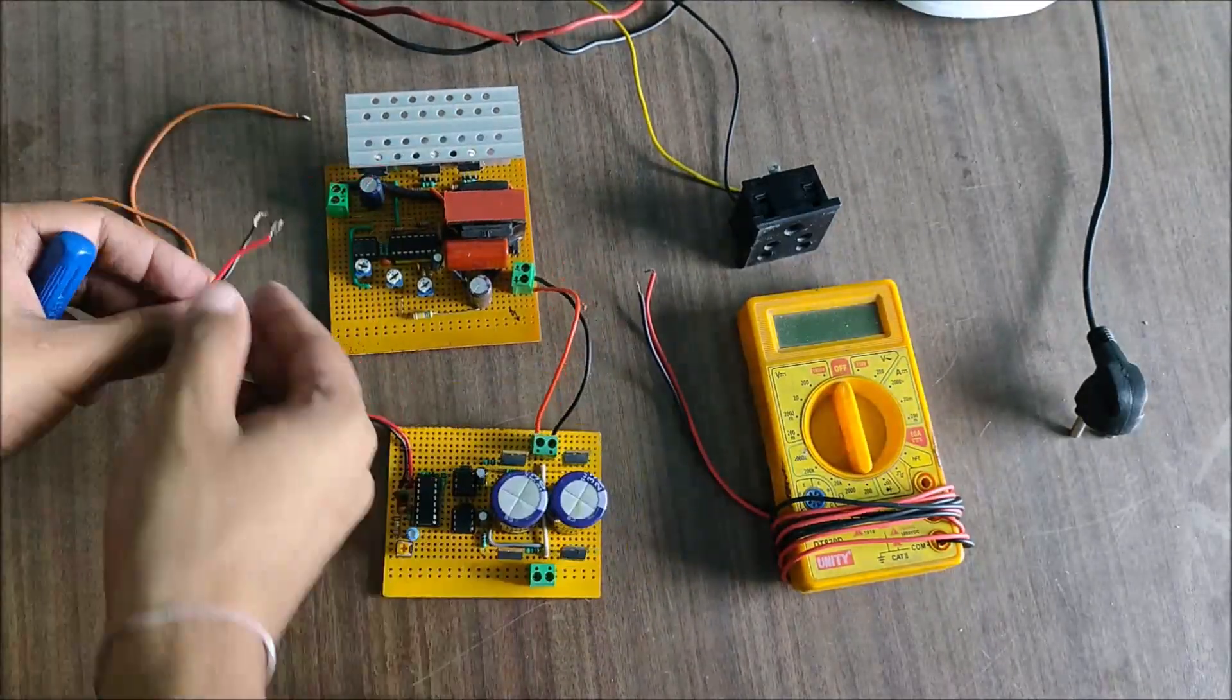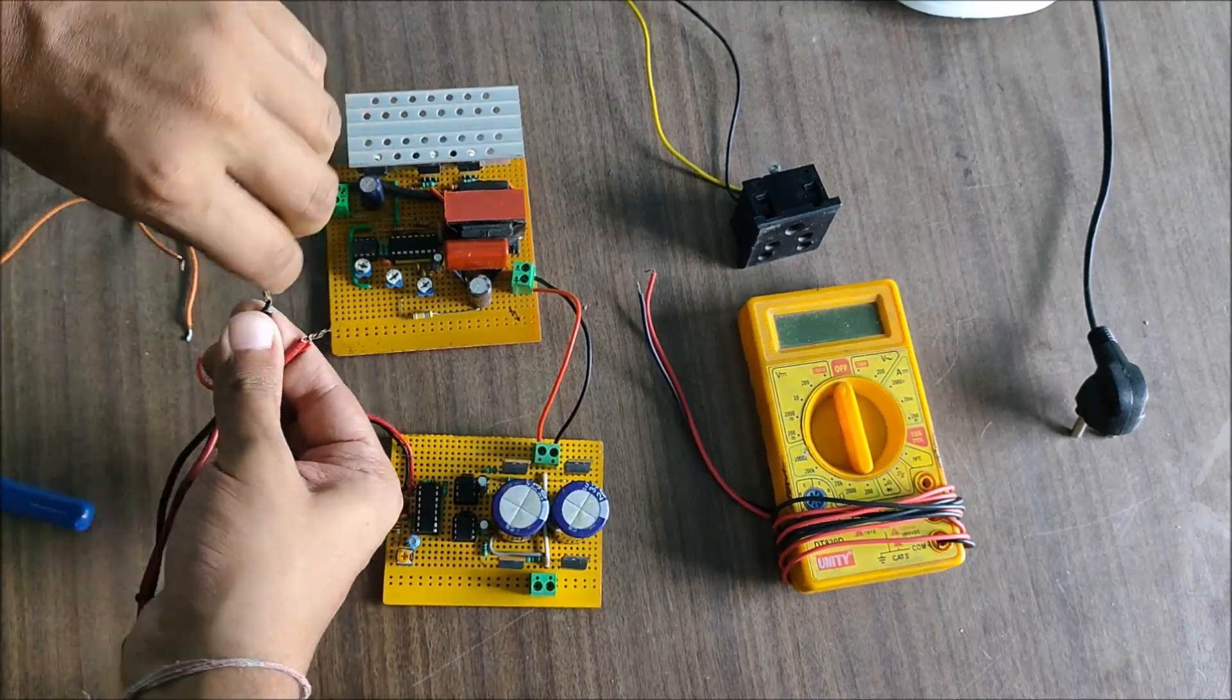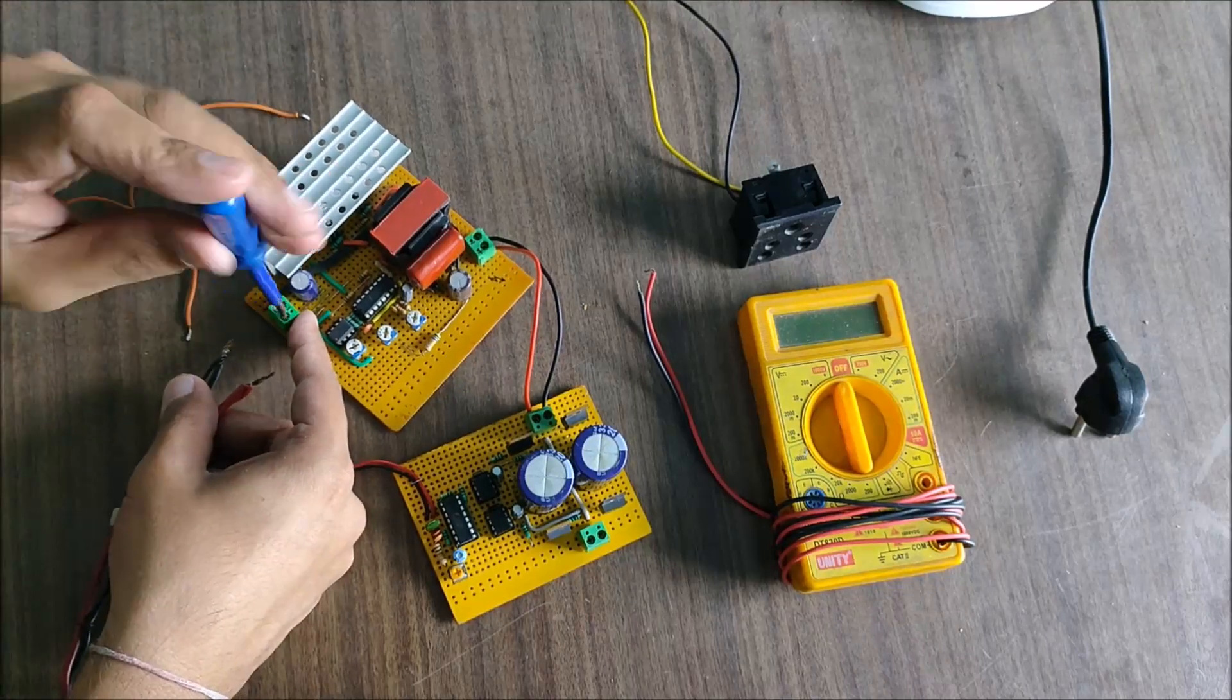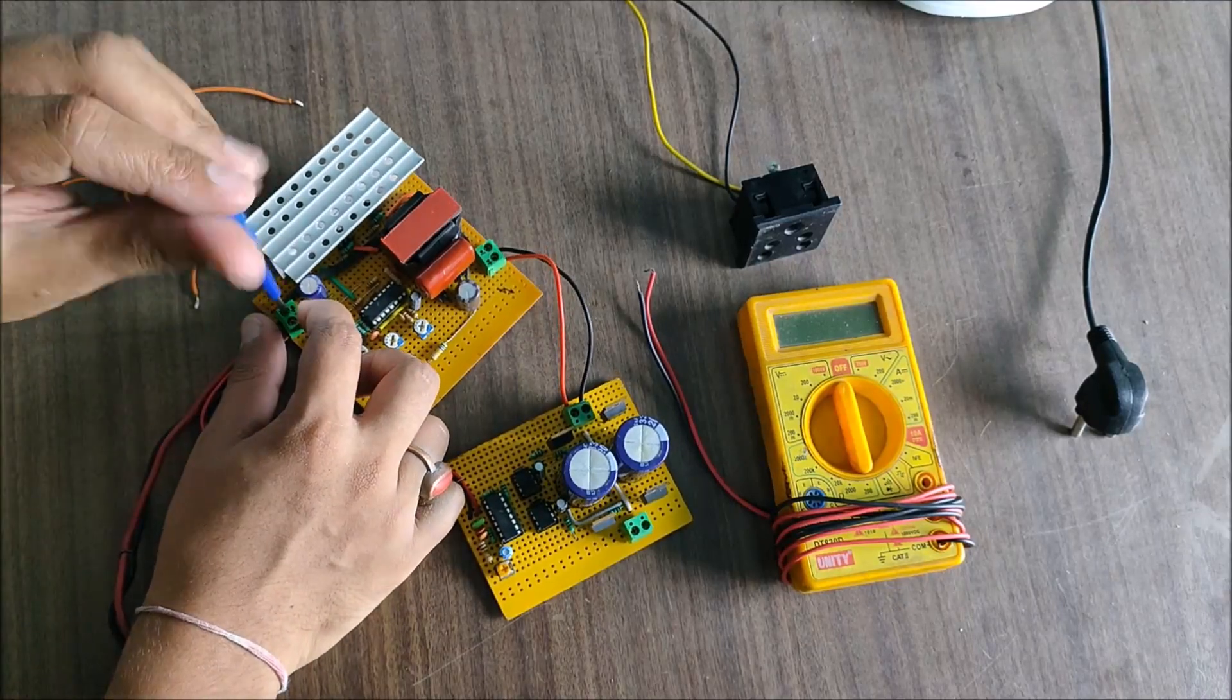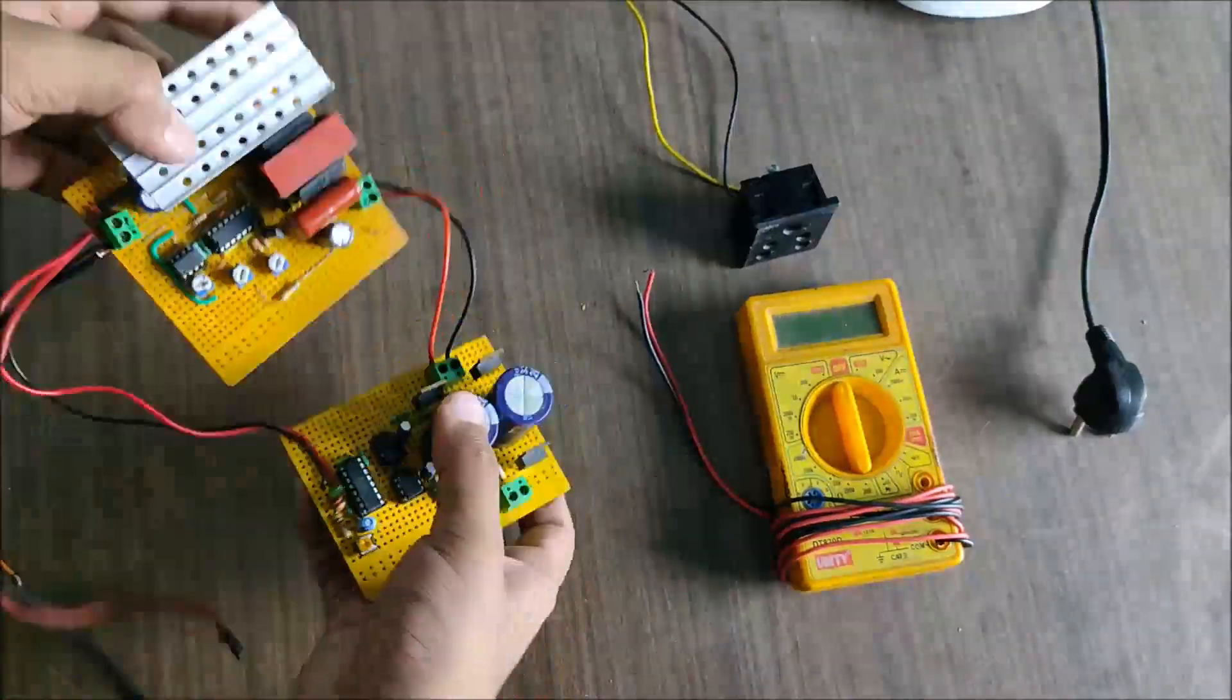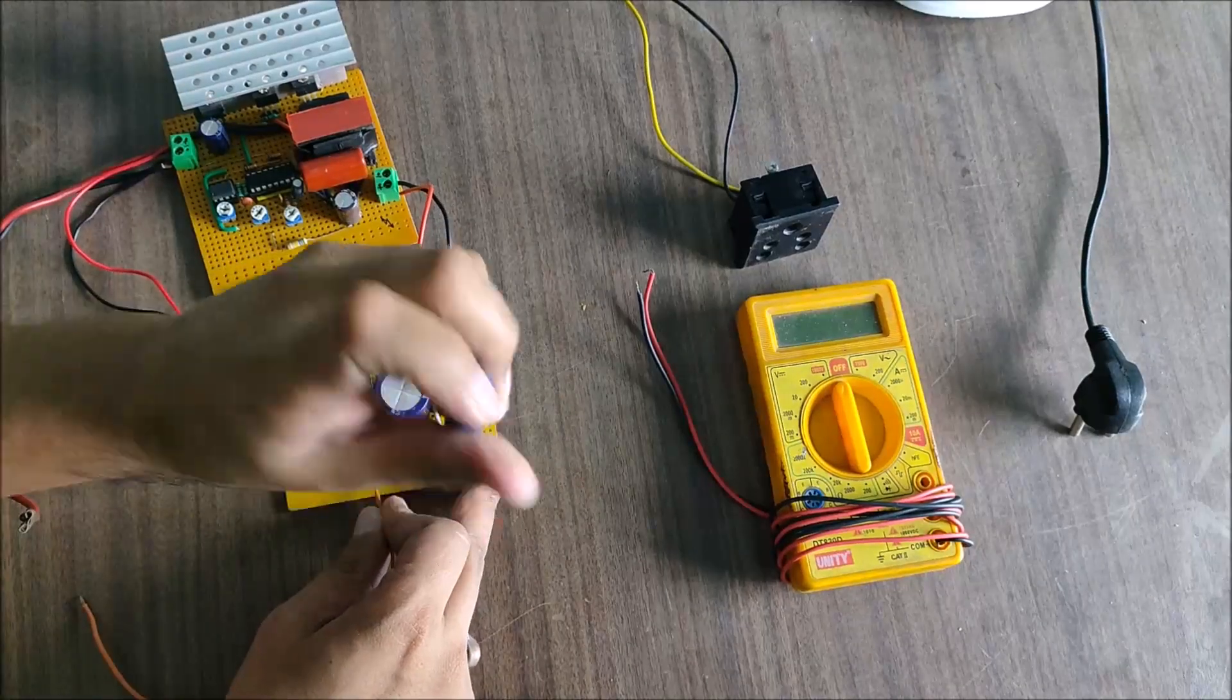The voltage supply for the oscillator section and the MOSFET driver comes from the 12 volt battery that we have attached. Finally let us attach wires to the output AC section along with a multimeter to verify the output voltage and an AC socket.